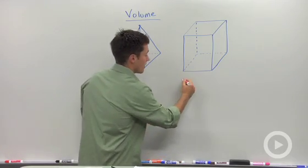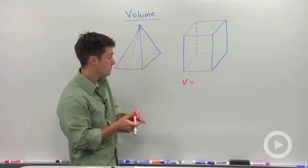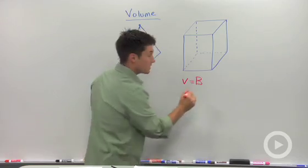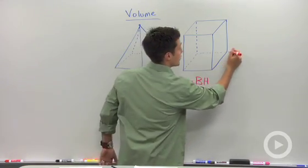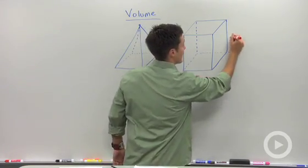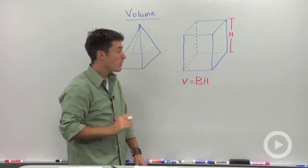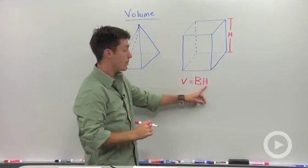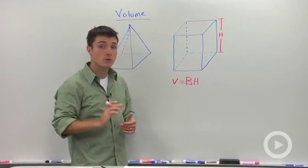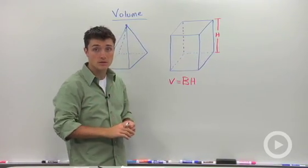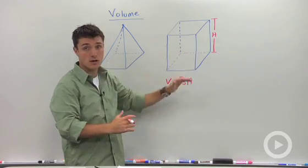The volume of a rectangular prism equals the base area times the height. I'll label the height as capital H, as the height of your solid. I use capital H here because if you had a trapezoid for a base, you'd have a lowercase h for that trapezoid's own height, plus the height of your solid.